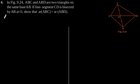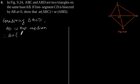Considering triangle ACD, we can see that the line segment CD is bisected by AB at point O. Therefore, AO is the median. Therefore, area of triangle ACO is equal to area of triangle ADO. Let's call this equation 1.